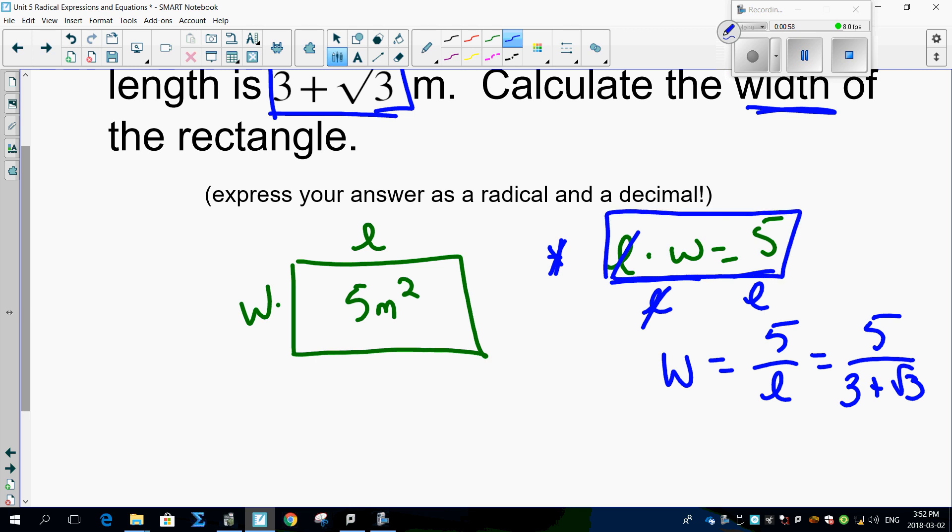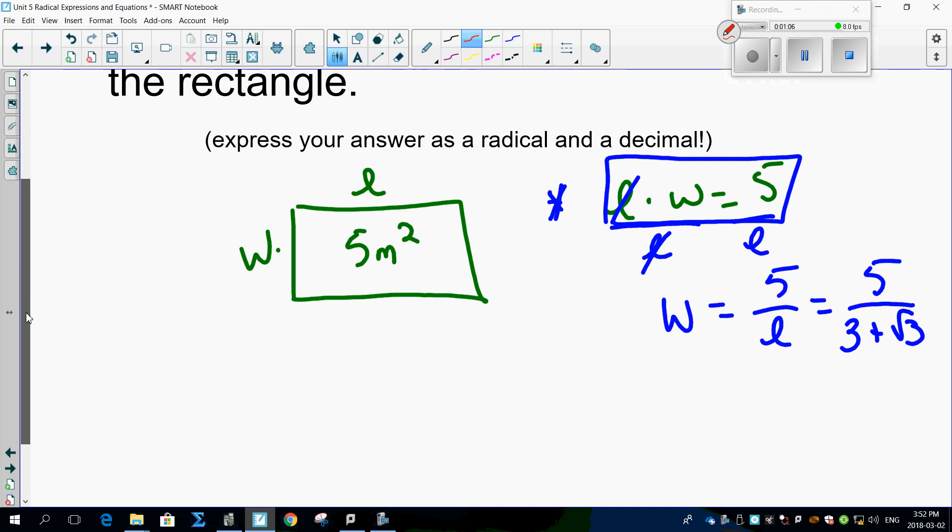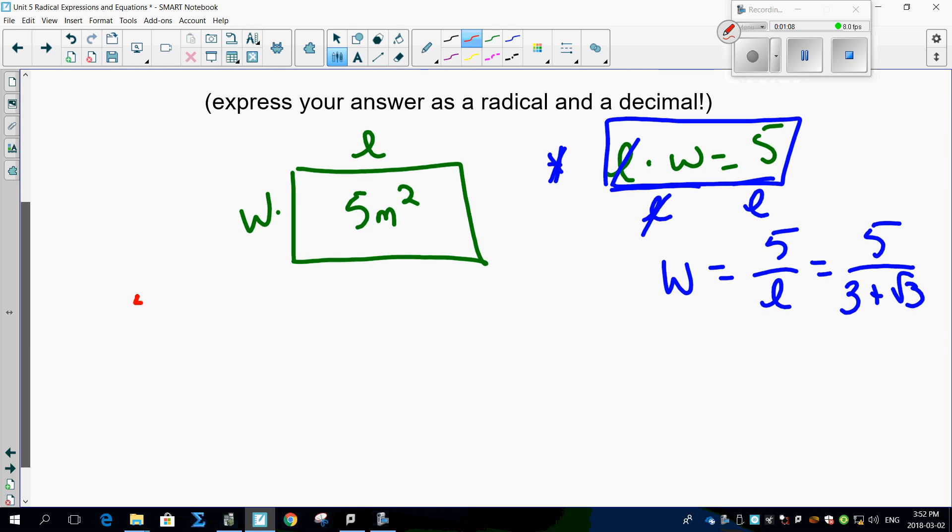I think you learned that way back in about grade 5 or grade 6. Now, here's something that's interesting. This is what makes this a math 20-1 question. You've got 5 over 3 plus root 3 that has to be rationalized now.